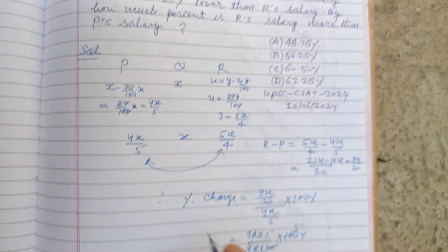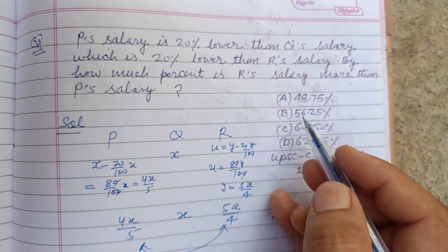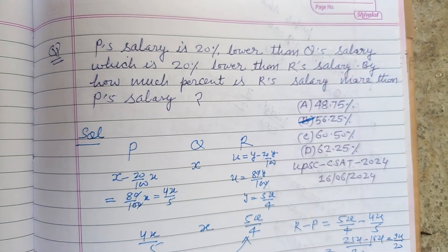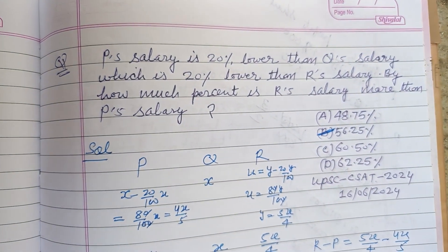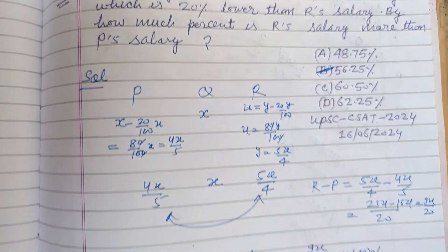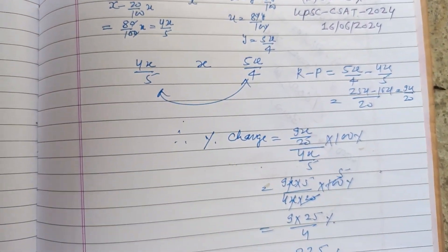56.25% is the correct answer for this question, which is found in option B. So option B is correct. I hope you got it. Please like the video, subscribe to the channel. Thanks for watching.